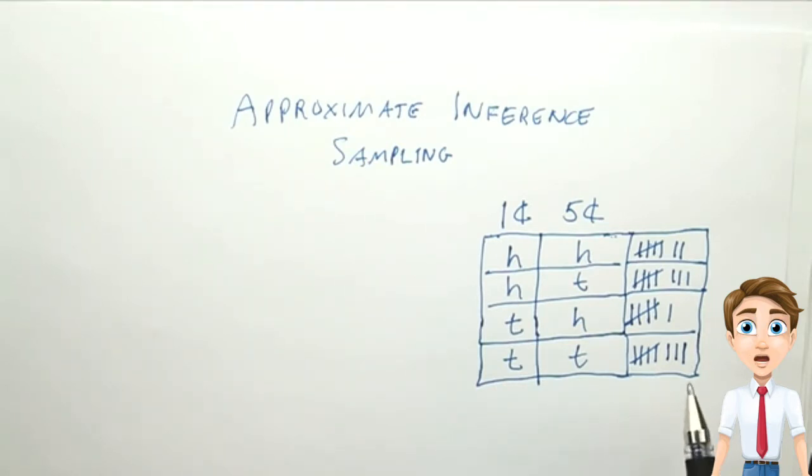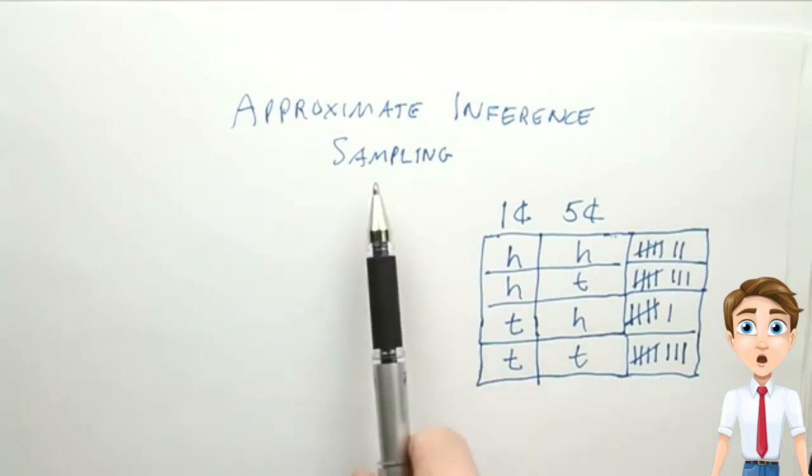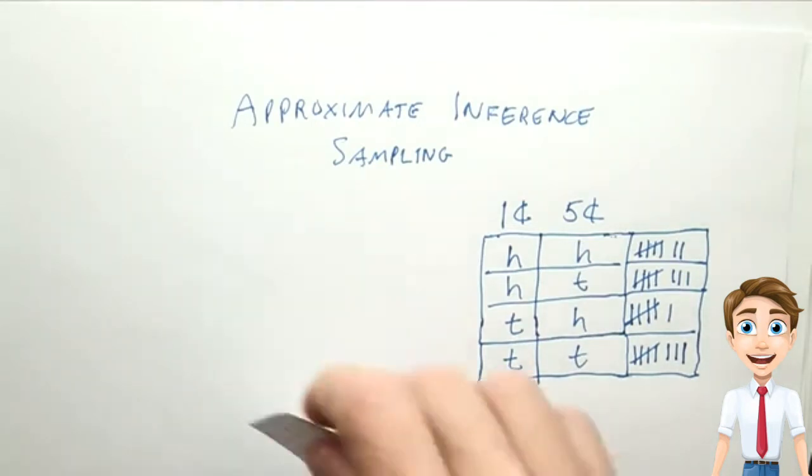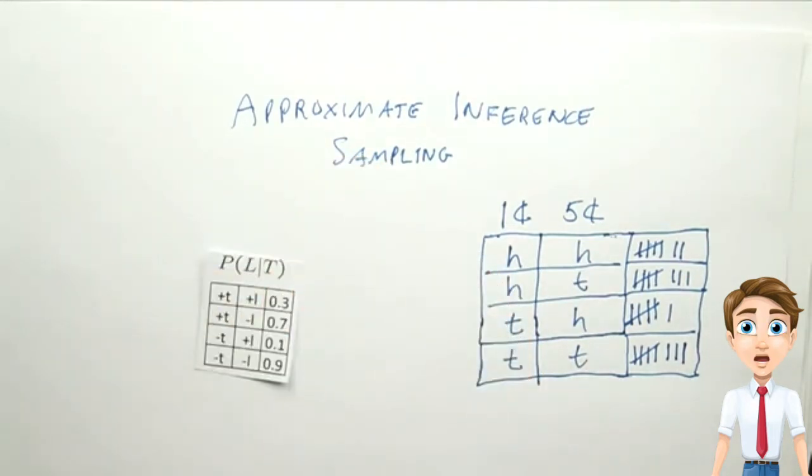But as we add more samples, the counts we get will come closer to the true distribution. Thus, sampling has an advantage over inference in that we know a procedure for coming up with models.